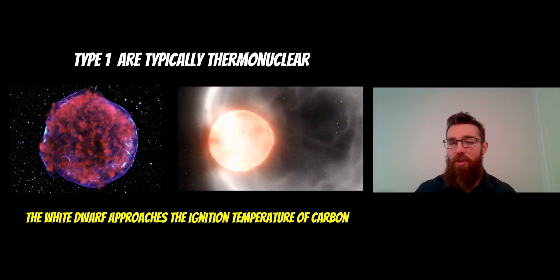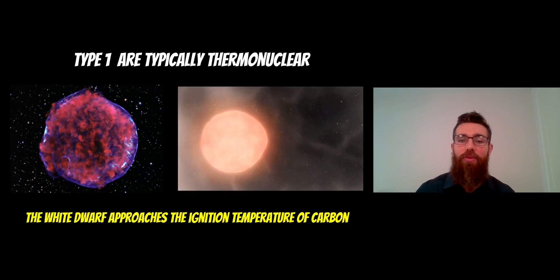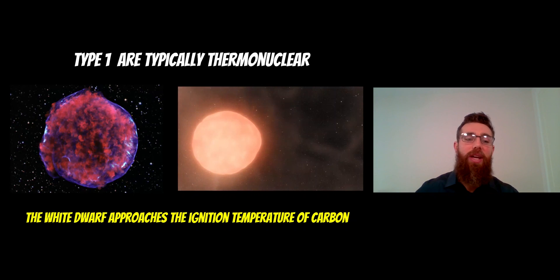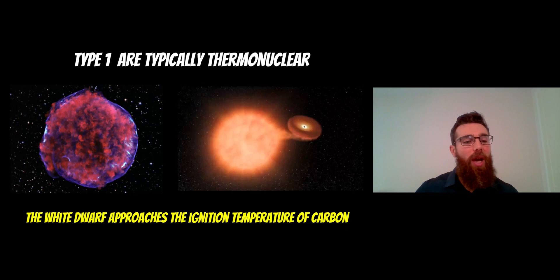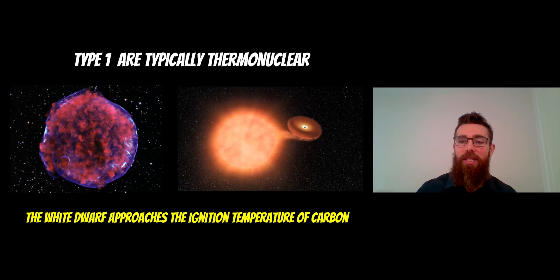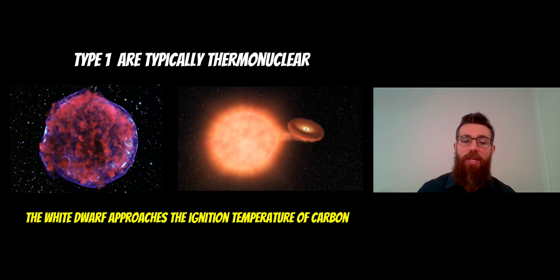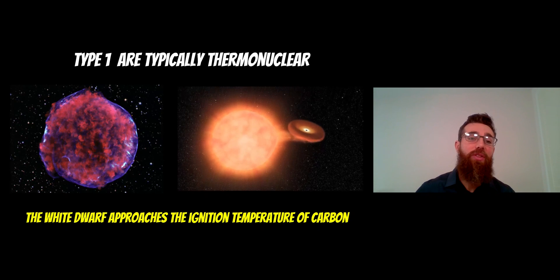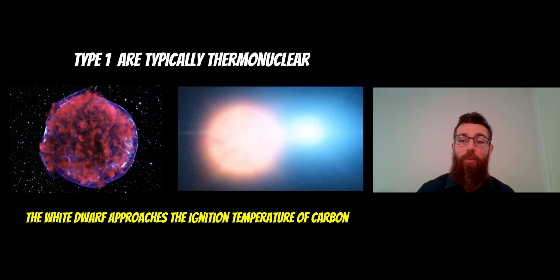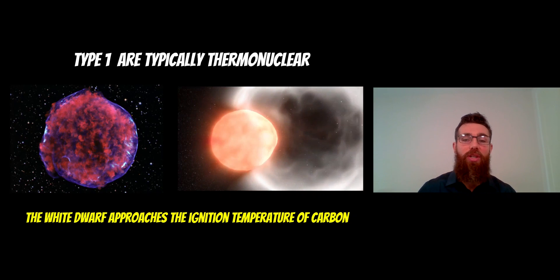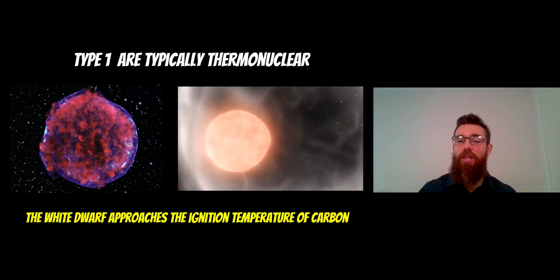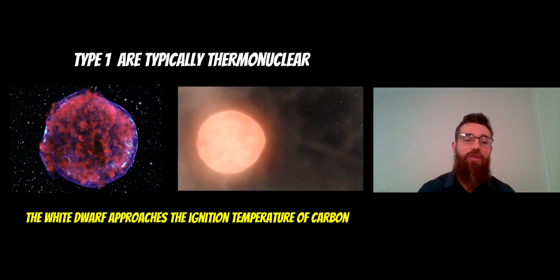Now the white dwarf will pull that material off, and once it gets to about 1.4 solar masses, you then have a supernova explosion. The reason why that occurs is it increases its mass to the point that it causes a temperature increase that approaches the ignition temperature of carbon, which is predominantly what a white dwarf is made of. Once that occurs, you get this thermonuclear reaction and it goes supernova. So that's a big difference as to what actually causes it.